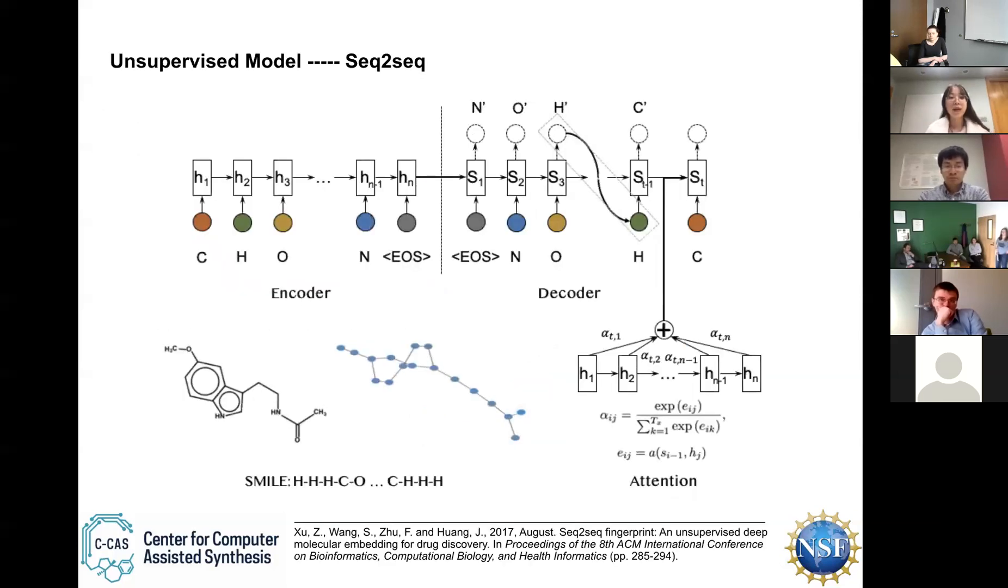And then firstly, I use the unsupervised model sequence to sequence. Sequence to sequence is autoencoder-decoder framework. For encoder, it encodes the string to the latent space. And for decoder, it reconstructs the string from the latent space. And we define the reconstruction error as the reconstruction loss and use this loss to train this model. And the latent space is what we want to represent the molecules.